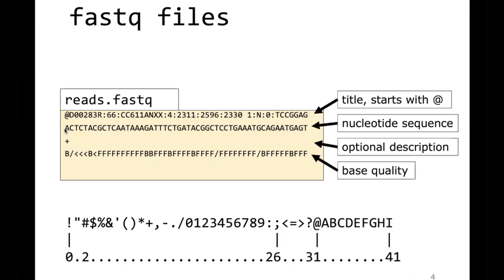So the at sign is 31, then A would be 32, and B would be 33. A slash character would represent a lower quality, around 12 or so. That's how base qualities are stored in a FASTQ file.